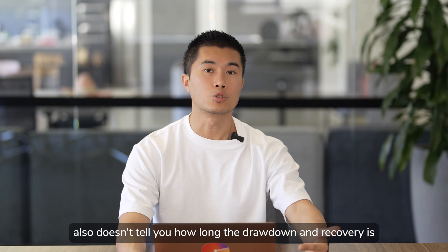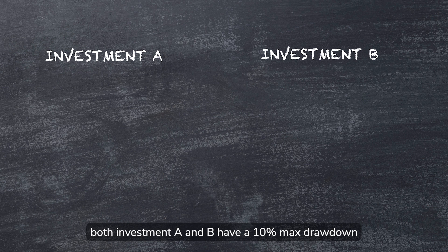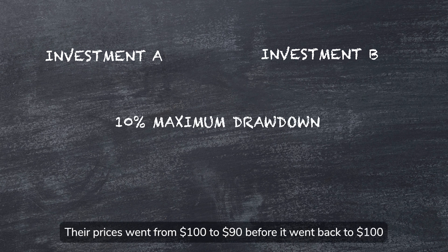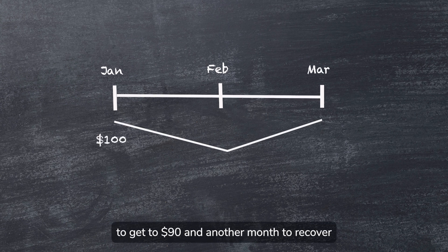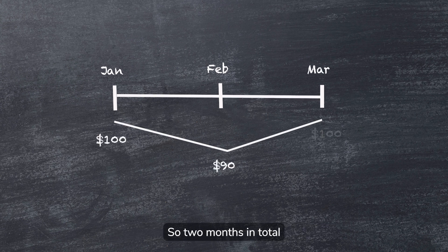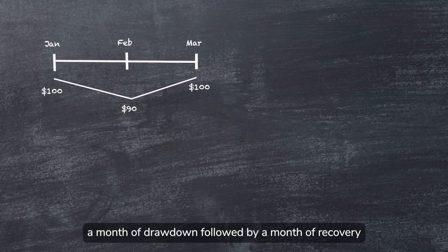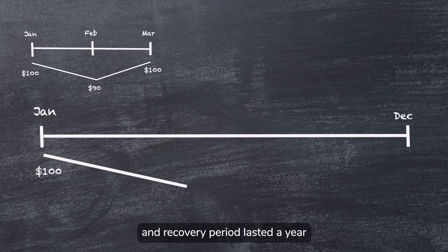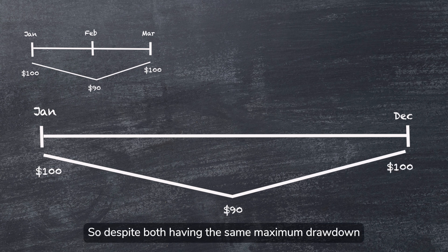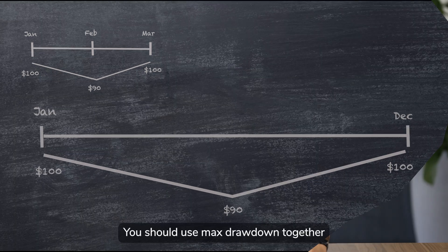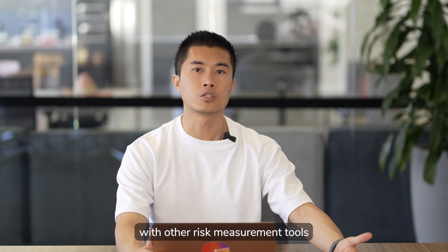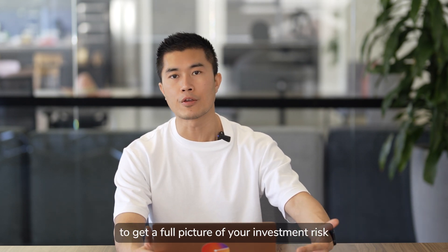Max drawdown also doesn't tell you how long the drawdown and recovery period is. Using the previous example, both investments A and B have a 10% max drawdown — their prices went from $100 to $90 before recovering to $100. It takes a month for Investment A to reach $90 and another month to recover, so two months in total. For Investment B, both the drawdown and recovery period lasted a year. So despite both having the same maximum drawdown, it takes much longer for Investment B to recover. You should use max drawdown together with other risk measurement tools to get a full picture of your investment's risk.